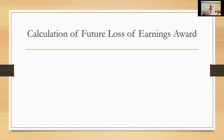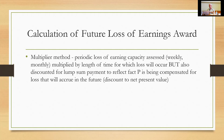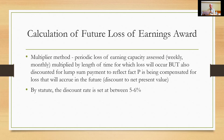Awards are calculated through the multiplier method: we work out the periodic loss of earning capacity — assessed in Australia traditionally on a weekly basis — and multiply this by the length of time for which the loss will occur. This is then discounted because it's a lump sum payment in advance, to reflect that the plaintiff is being compensated for future loss. This discounting to net present value uses, in Australia, a rate of five to six percent — compared to minus 0.25% in comparable English jurisdictions — which immediately signals that this is not based on actual real rates of return.